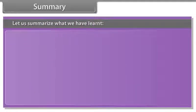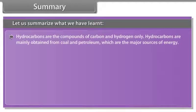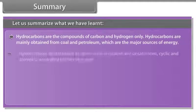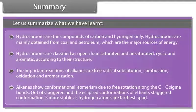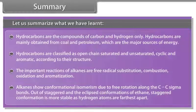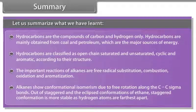Summary: Let us summarize what we have learned. Hydrocarbons are the compounds of carbon and hydrogen only. Hydrocarbons are mainly obtained from coal and petroleum, which are the major source of energy. Hydrocarbons are classified as open chain saturated and unsaturated, cyclic and aromatic according to their structure. The important reactions of alkanes are free radical substitution, combustion, oxidation and aromatization. Alkanes show conformational isomerism due to free rotation along the C-C sigma bonds. Out of staggered and eclipsed conformations of ethane, staggered conformation is more stable as hydrogen atoms are farthest apart.